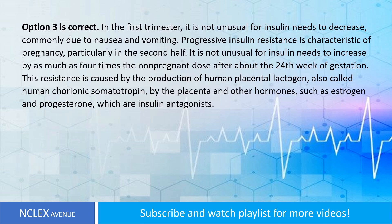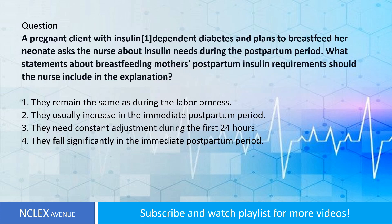In the first trimester, it is not unusual for insulin needs to decrease, commonly due to nausea and vomiting. Progressive insulin resistance is characteristic of pregnancy, particularly in the second half. It is not unusual for insulin needs to increase by as much as four times the non-pregnant dose after about the 24th week of gestation. This resistance is caused by the production of human placental lactogen, also called human chorionic somatotropin, and other hormones such as estrogen and progesterone, which are insulin antagonists.